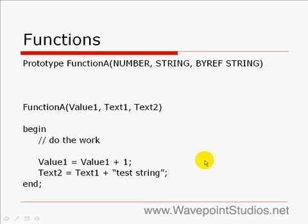Now, functions. Here's an example of a function. When you create your own function in the InstallScript language, you have to create a function prototype. You put this up at the beginning of the file and you put in the data type of the variables that you're passing.